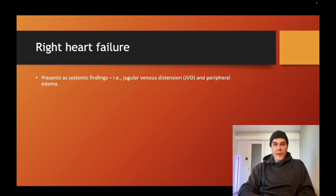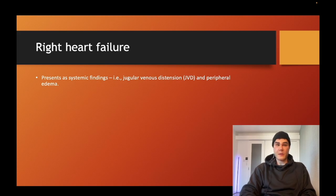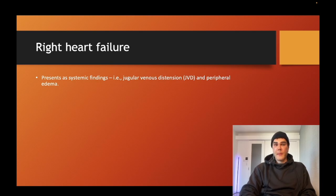Let's move to right heart failure. This presents with systemic findings: jugular venous distension and peripheral edema. The same way the left heart backs up to the lungs, the right heart backs up to the body. Jugular venous pulsations three centimeters above the sternal angle is normal — I've seen NBME questions write that and students think it's increased; it's not. Three centimeters above is normal. Jugular venous distension means you have impaired right heart filling, which most often means right heart failure, though it can occasionally be cardiac tamponade.